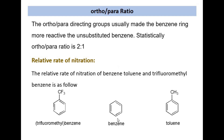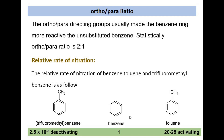The relative rate of nitration: if benzene has a relative rate of reaction of one, the relative rate of reaction of trifluoromethylbenzene — which is a deactivating group — is much lower. We see that an activating group makes benzene more reactive, about 20 to 25 times more reactive than benzene itself, as compared to a deactivating group.